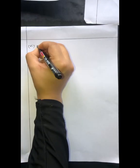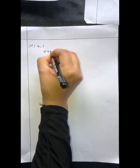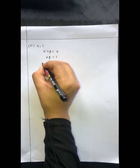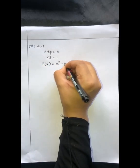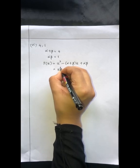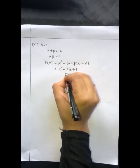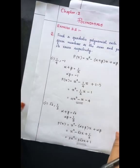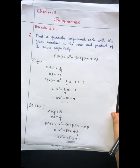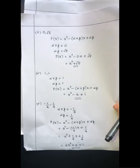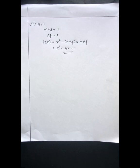For the sixth sub-question, the values are 4 and 1. So alpha plus beta equals 4 and alpha into beta equals 1. Substituting into the equation p(x) = x² minus (alpha plus beta) into x plus alpha into beta gives x² minus 4x plus 1. We have now completed exercise 2.2. If you have any doubts regarding these questions, you can ask me in the comment section. Thank you.